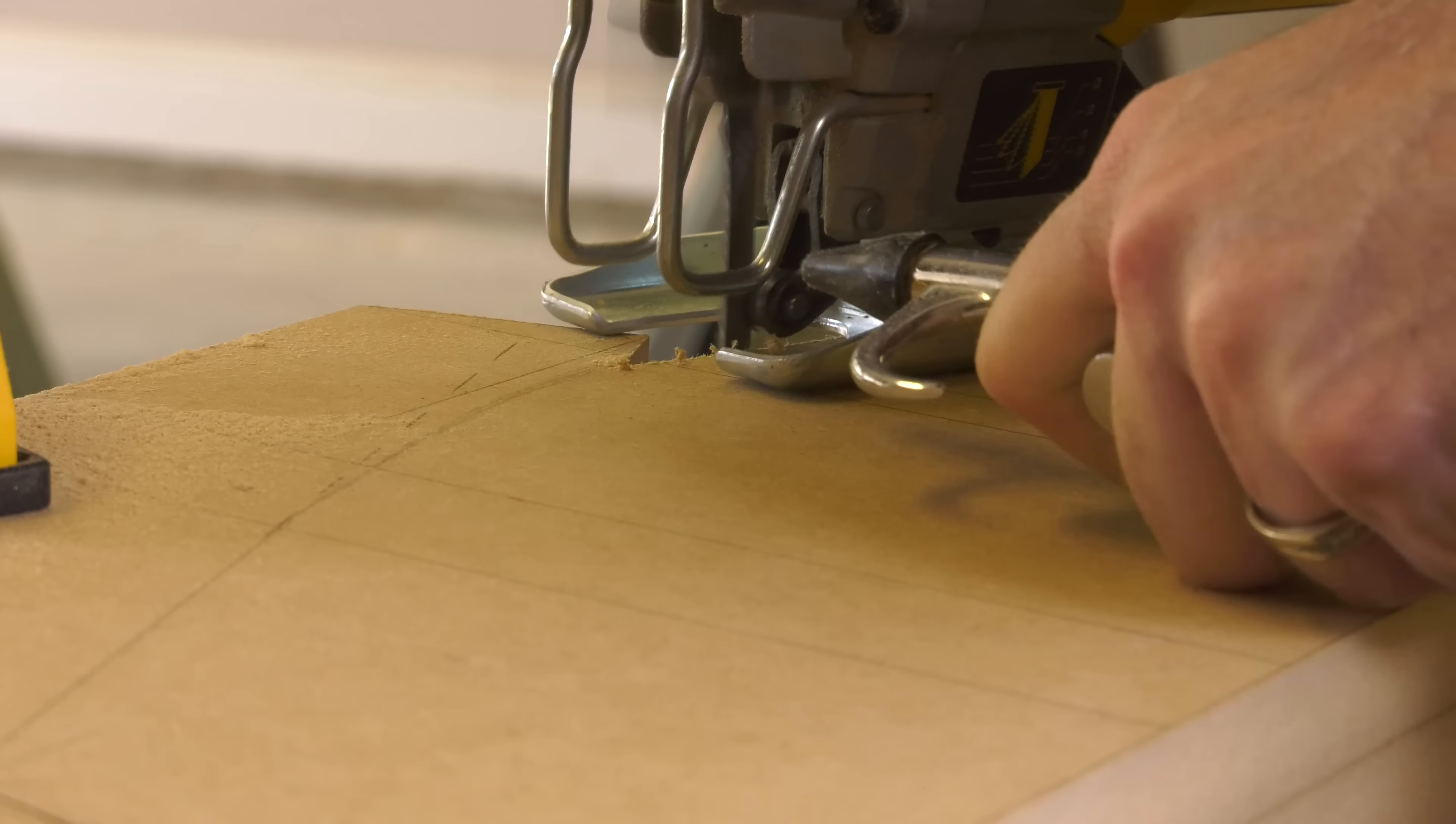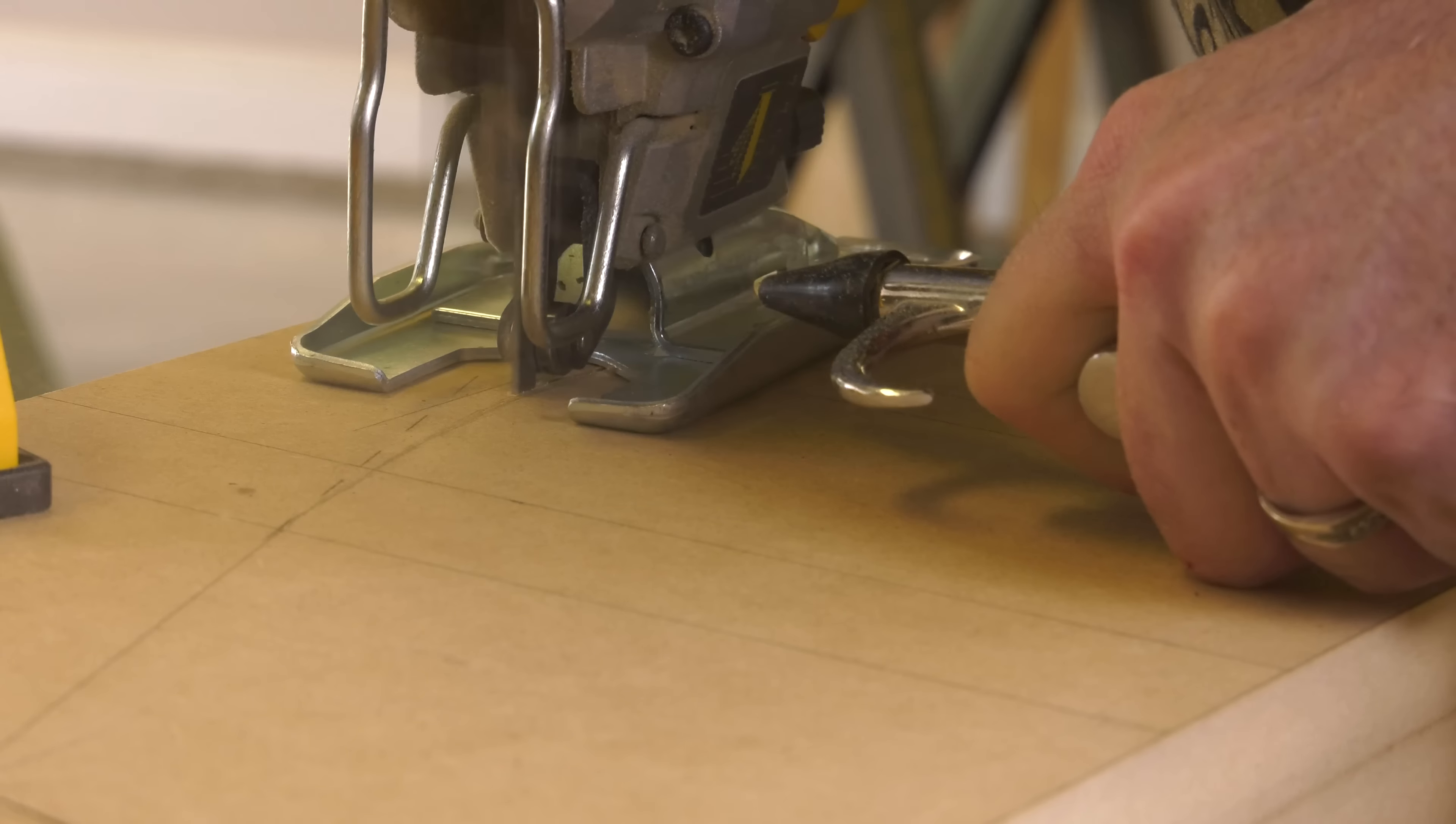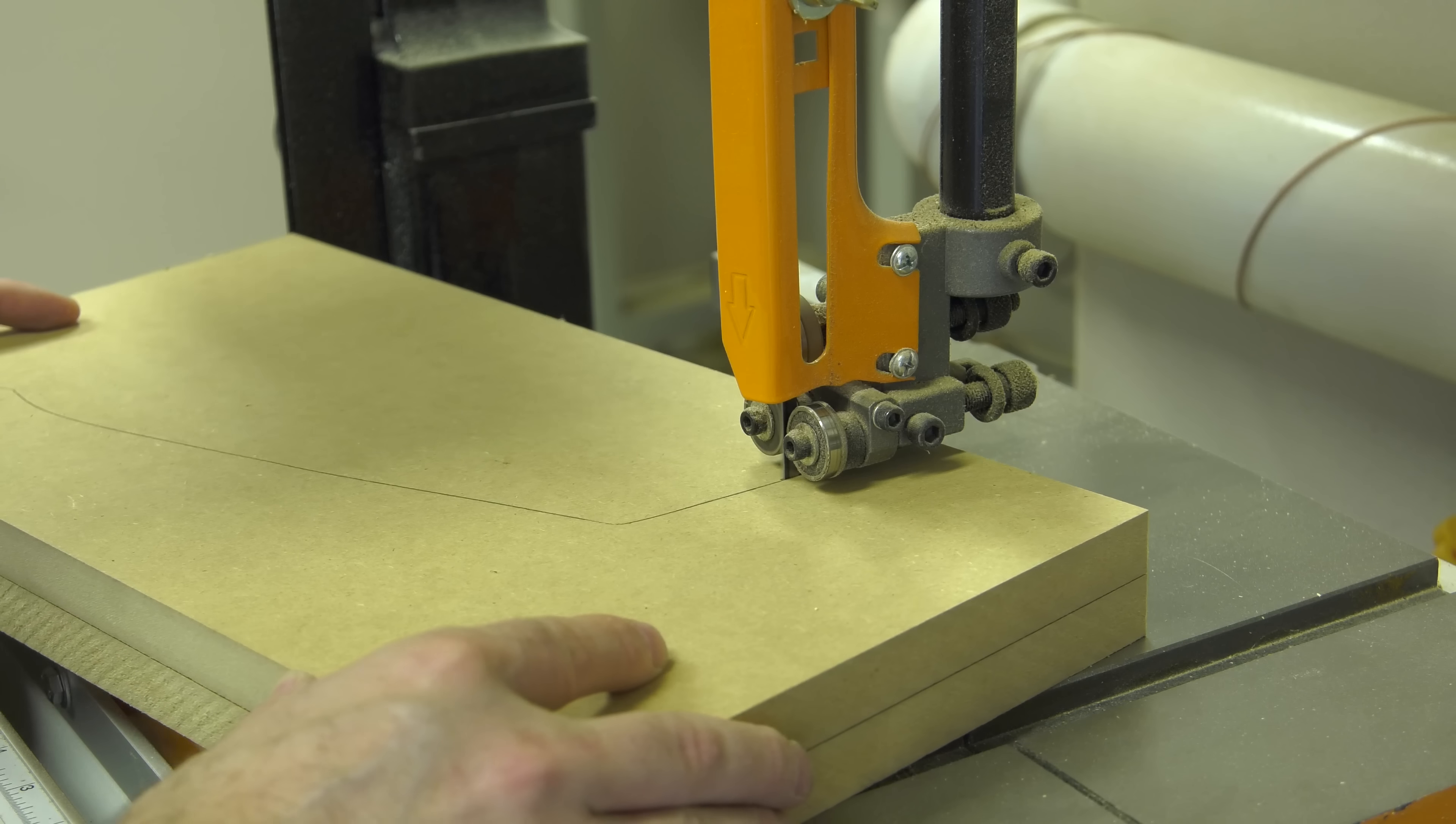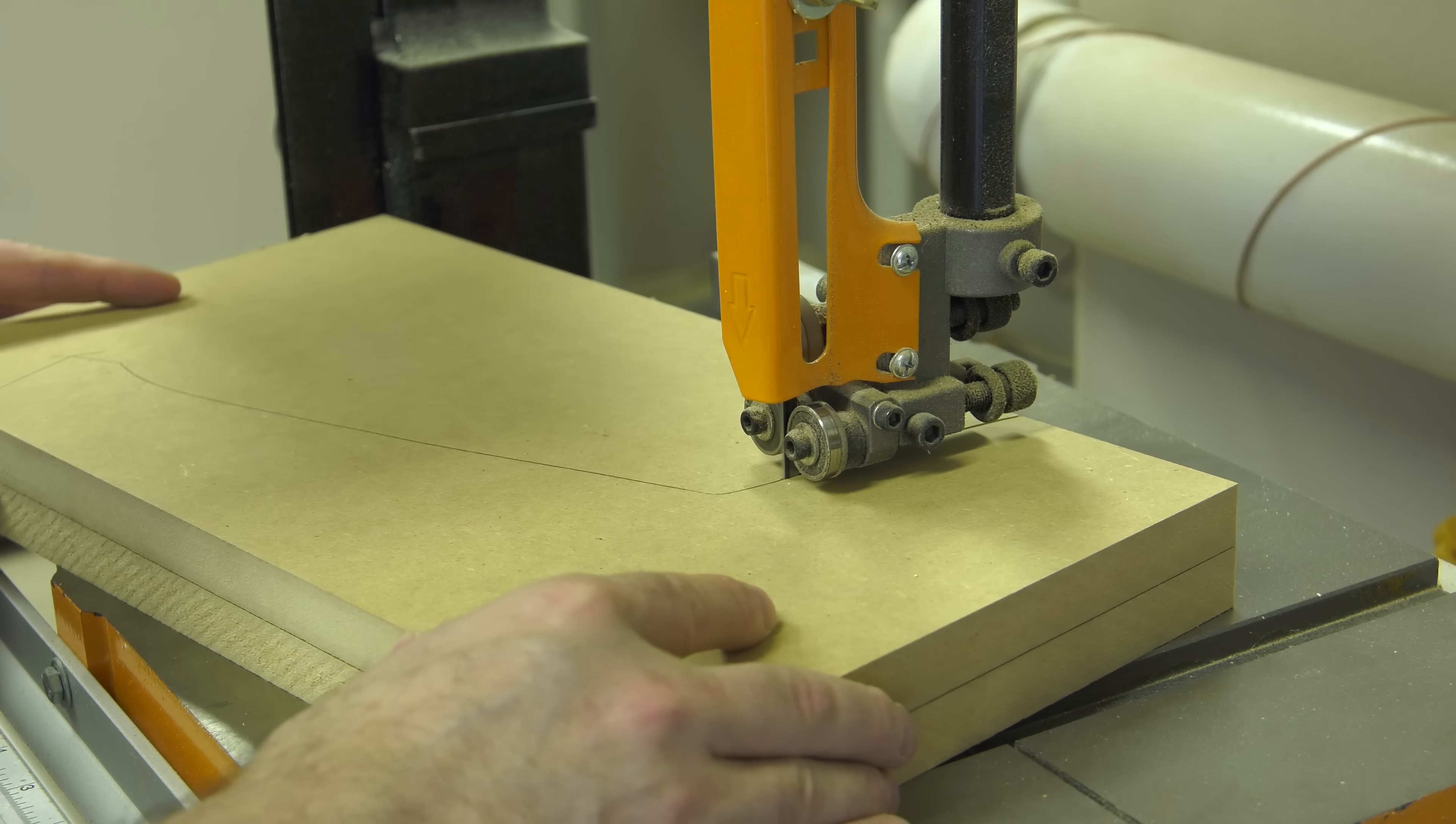I like to use my air compressor to blow the dust away as I'm cutting so I can see the line. For the second arcade, I used my bandsaw to cut it out and it went much faster.